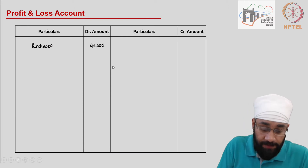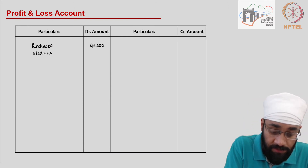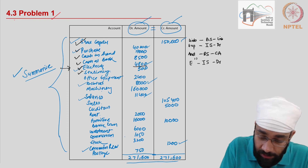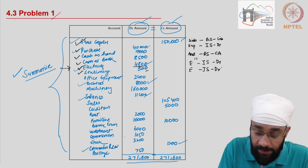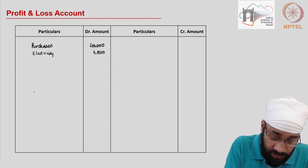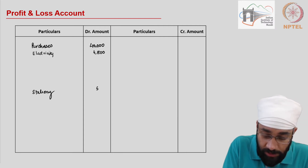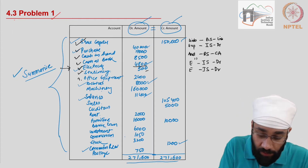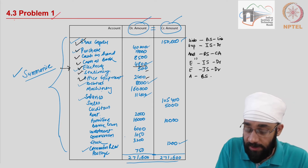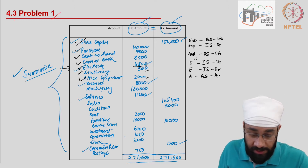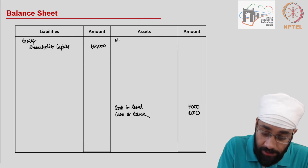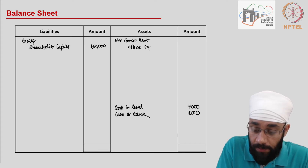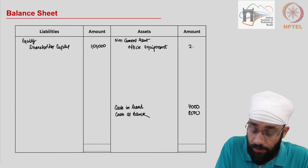Electricity goes in as a direct expense at 4,800. Then you have stationery 500 — this is an expense, income statement debit side. I'll write stationery 500. Next, office equipment 2,400 is an asset; it goes to the balance sheet on the asset side under non-current assets. I'll write office equipment 2,400 there.